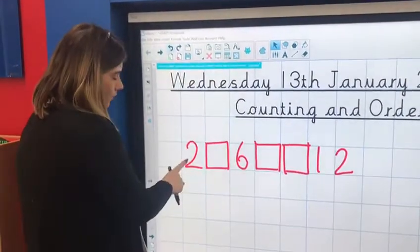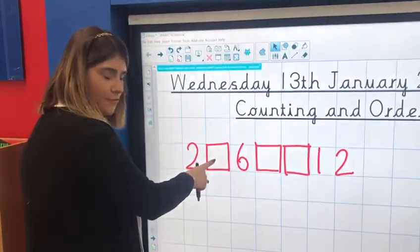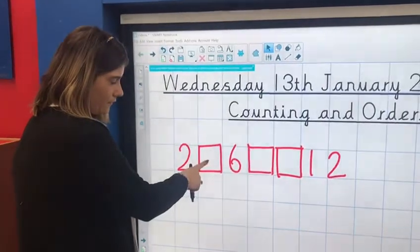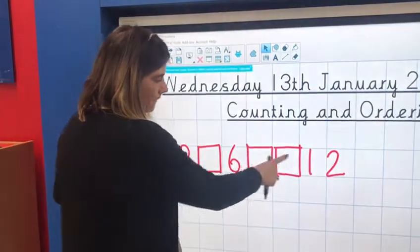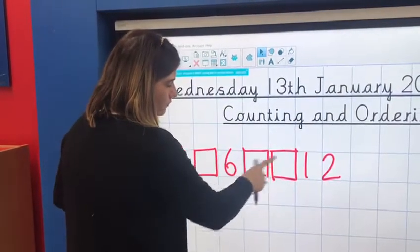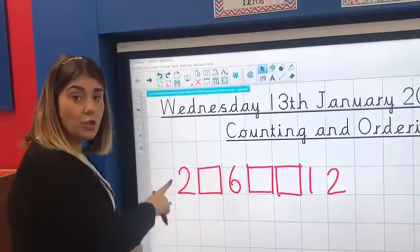2, work out with your grown-up what comes next. 3, 4, 5, 6. And then with your grown-up, work out what 2 numbers will go in these missing boxes here, remembering this pattern is counting in 2s.